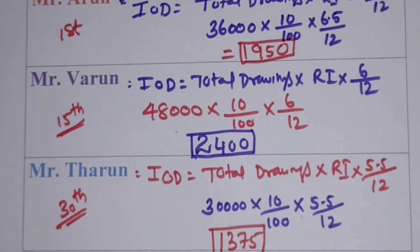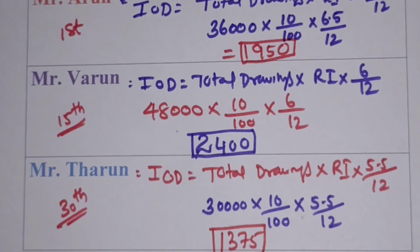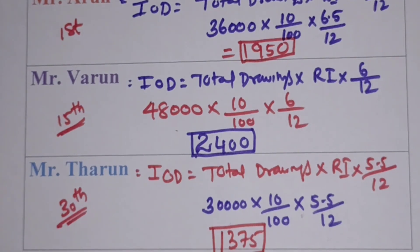This is the calculation of interest on drawings under the average period method. In case of any doubt, please send it through the comment box and I will reply. Thank you very much for watching. Please subscribe to my channel for further notifications and don't forget to press the bell icon.